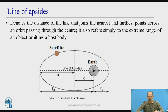Line of apsides denotes the line that joins the nearest and furthest points across an orbit, passing through the center. It also refers to the extreme range of an object orbiting a host body. When you draw a line from the furthest point to the nearest point on the orbit, passing through the center of the earth, that is called the line of apsides.